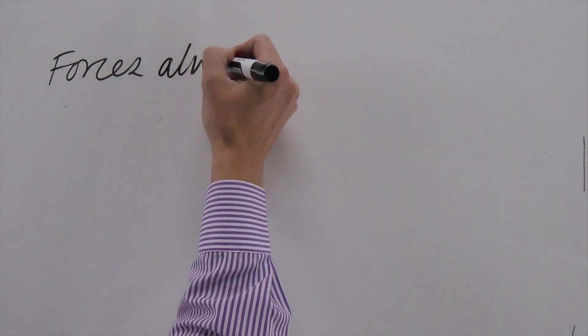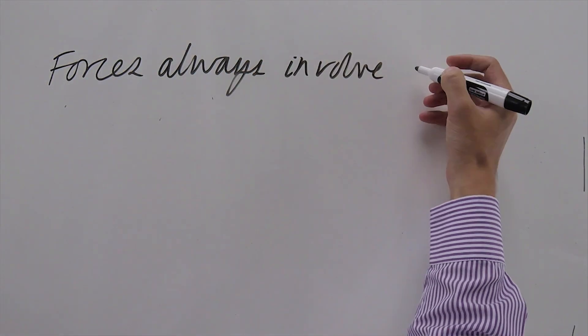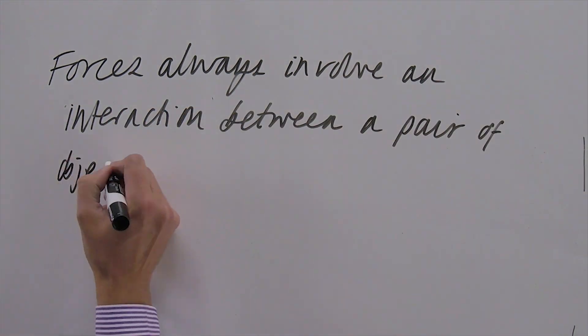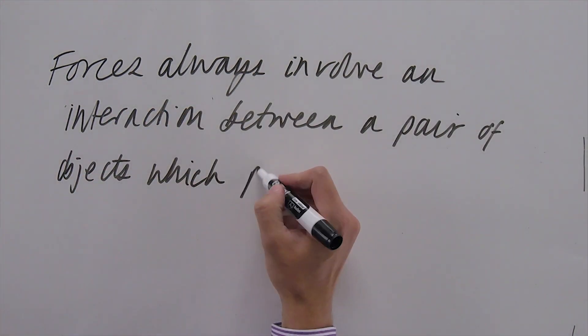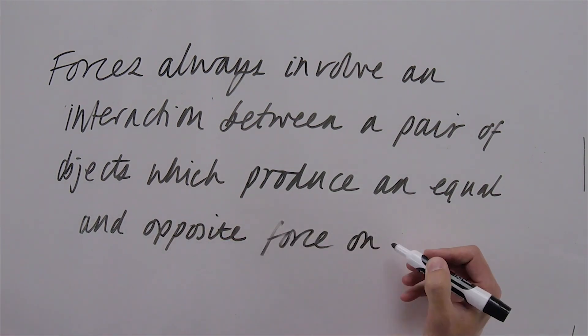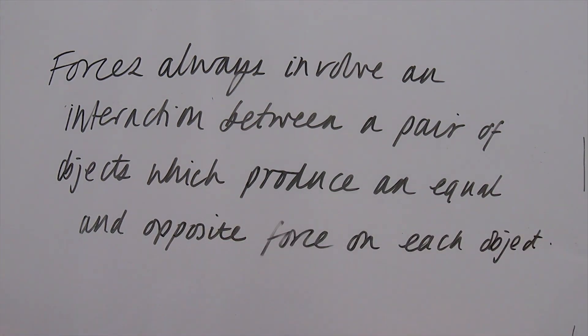In other words, if you push somebody with a force of 100 newtons, you'd say 100 newtons to the right, or you've pulled with 200 newtons to the left. The other thing about forces — not a lot of people seem to understand this — is that forces are always an interaction between two objects. So there's two objects, and they exert equal and opposite forces on each other.